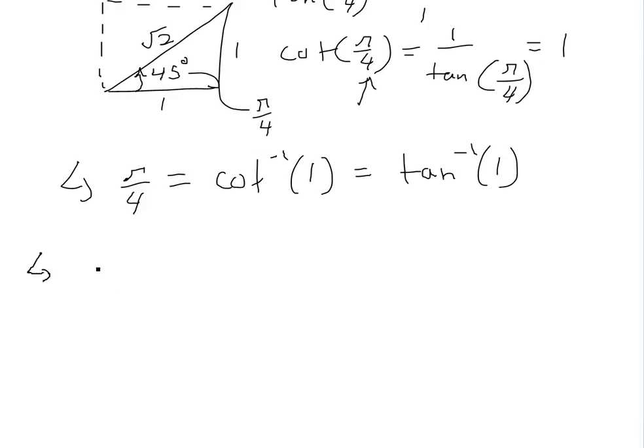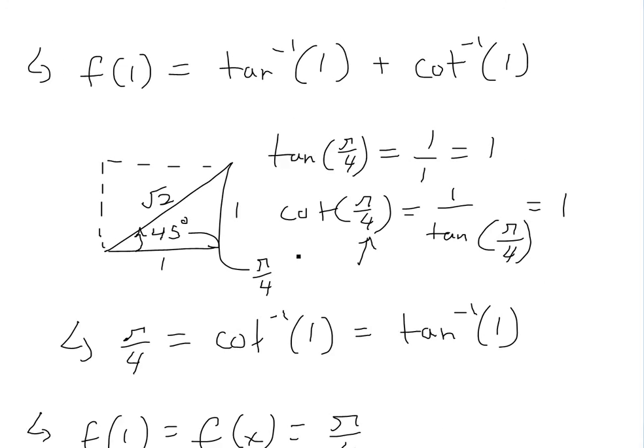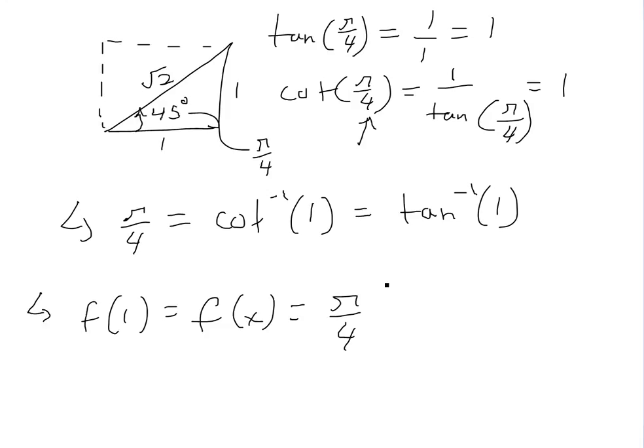Now we know it's π/4, so we can plug those in. We get f(1) = f(x) because it's constant, and this equals π/4 + π/4, which equals π/2. And there is our proof for it.